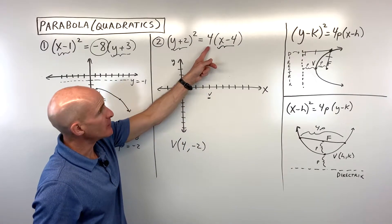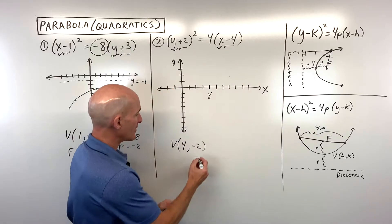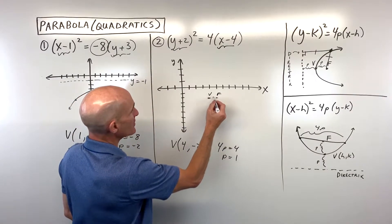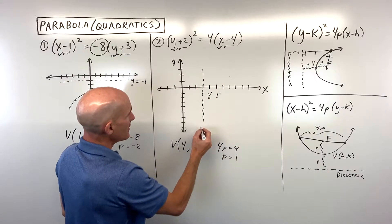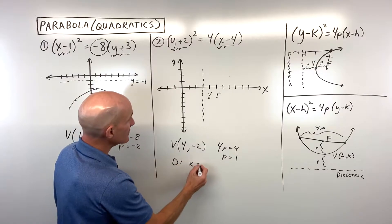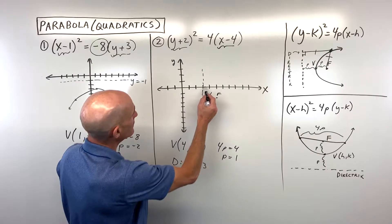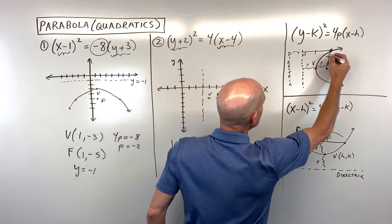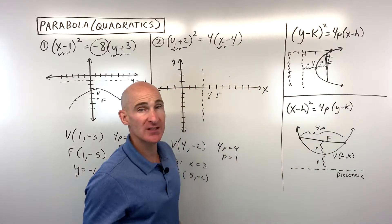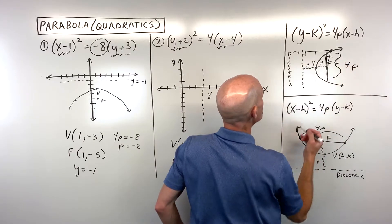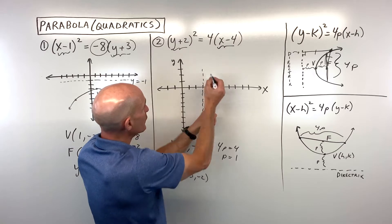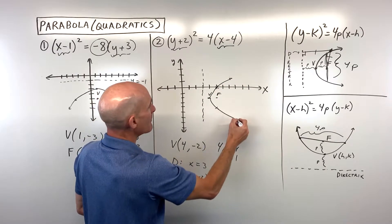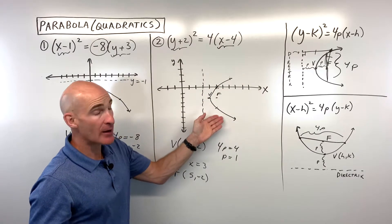We can see 4p equals 4, so p equals 1. Going right 1 from the vertex gives us our focus, and left 1 gives us our directrix. Since this is a y-squared type, the directrix is a vertical line: x equals 3. Our focus is at the point (5, -2). At the focus level, 4p equals 4, so we go up 2 and down 2 to get two points on the parabola.